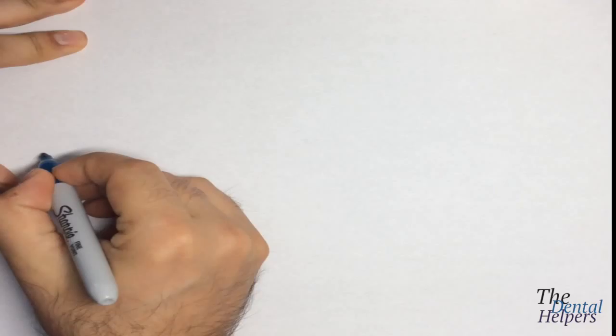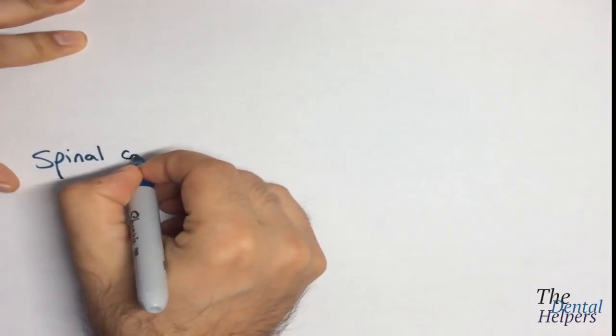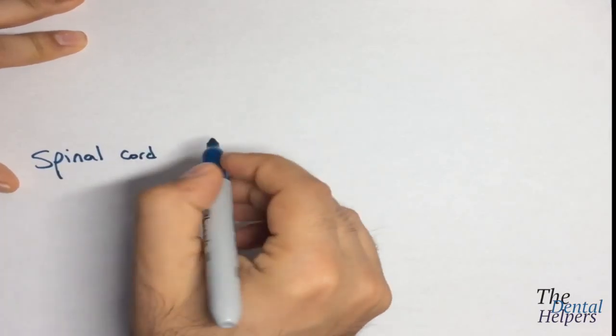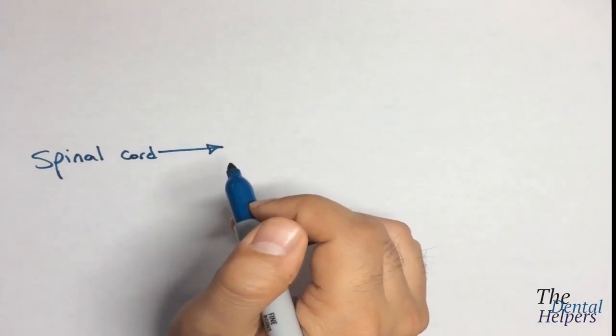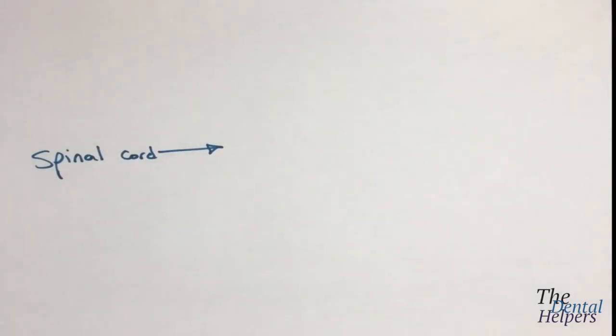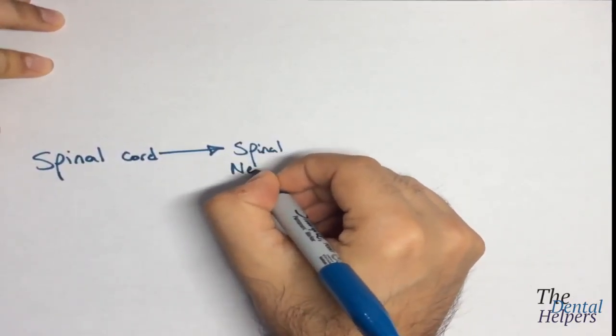We have GSA and GSE: GSA is general somatic afferent, coming from the skin and proprioception of the back, while GSE is general somatic efferent, relating to the intrinsic muscles of the back.